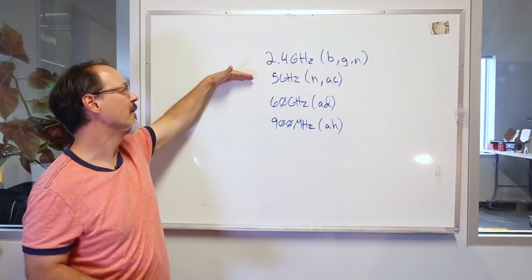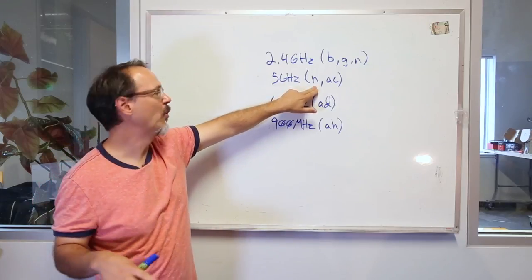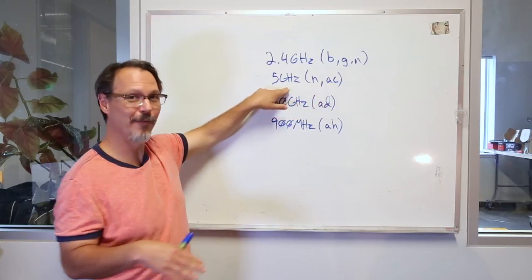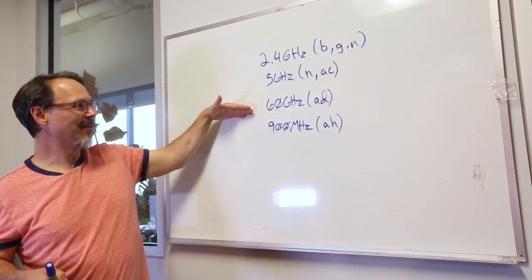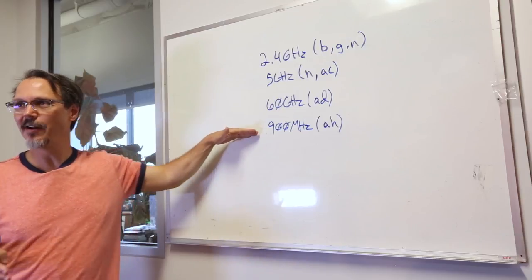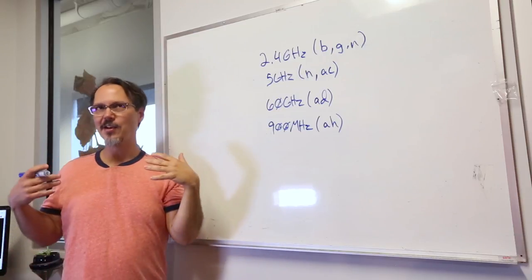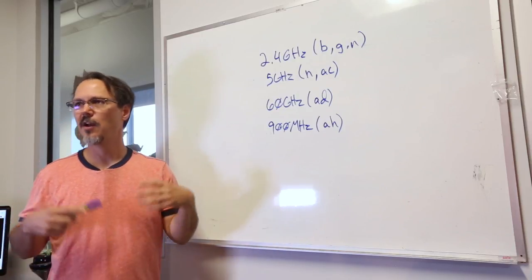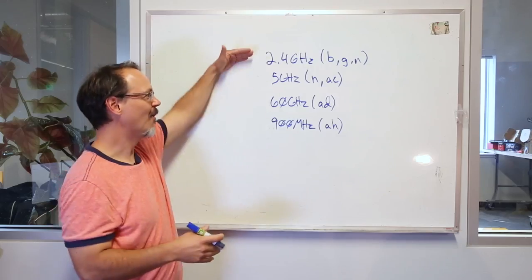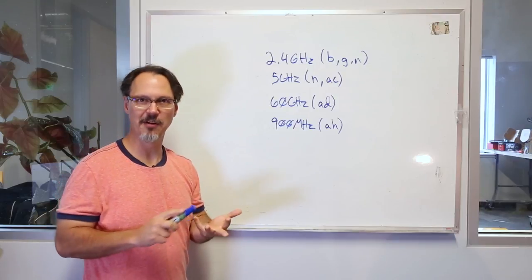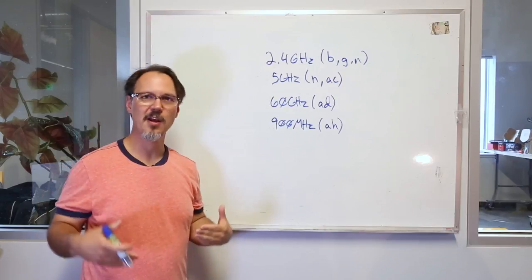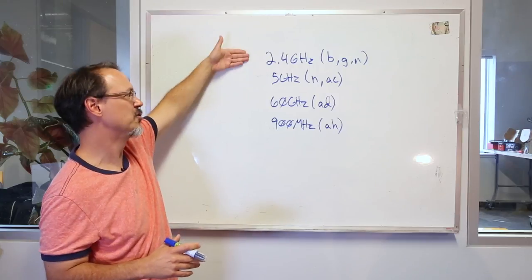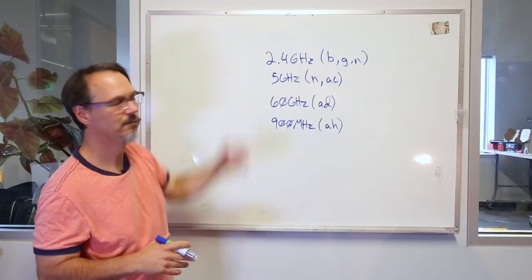And then you have 5 GHz. N can also optionally support 5 GHz and AC. 802.11 AC runs on 5 GHz exclusively. And then there is AD that runs at 60 GHz and AH that runs at 900 MHz. Now each of these frequencies has its own propagation characteristics, bandwidth requirements given the data rates, et cetera. But these are all still ISM bands. This is part of all that was released by the FCC back in 1985. Wi-Fi is expanding into these other frequencies, but they're still largely in the 2.4 and some 5 GHz action.